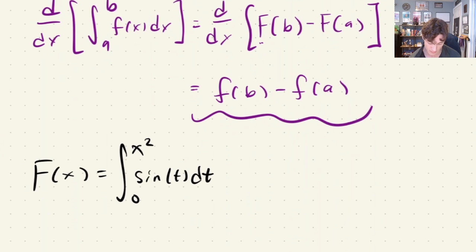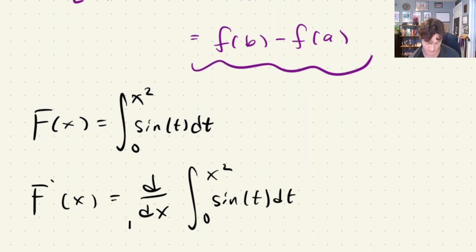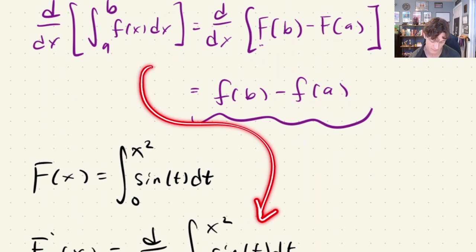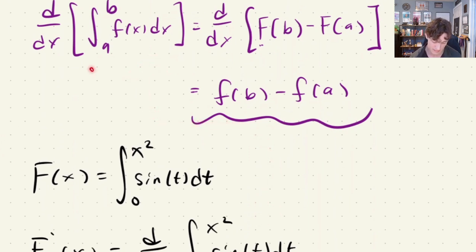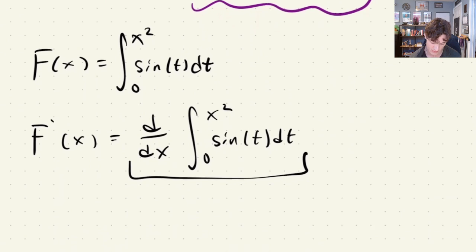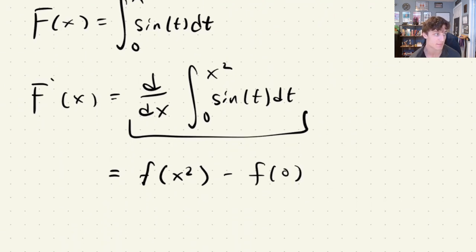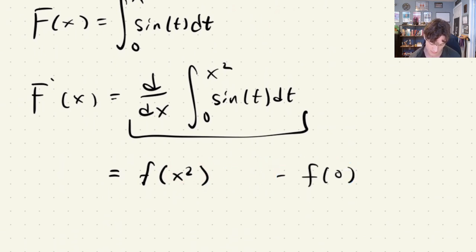We are looking for F prime of x, which equals d/dx of the integral from 0 to x squared of sin(t) dt. This is exactly what we showed from the fundamental theorem of calculus. In this case b equals x squared and a equals 0. So we jump straight to the result: f(b) minus f(a), which is little f(x squared) minus little f(0). But since x squared is a variable limit, we must apply the chain rule — so we multiply by the derivative of x squared.